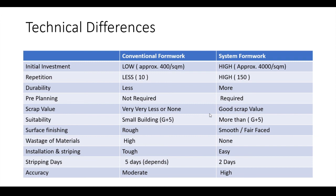For installation and stripping: with conventional formwork you nail it together and dismantle it, whereas system timber formwork is easy to dismantle and handle. For stripping days: a wall takes two days with conventional formwork but only one day with system formwork. As mentioned for the drop system, panels can be retrieved without removing props, making stripping time very short in system formwork. For accuracy: no need to elaborate — accuracy is high in system formwork because it is pre-designed. These are the key comparative data points to refer to.